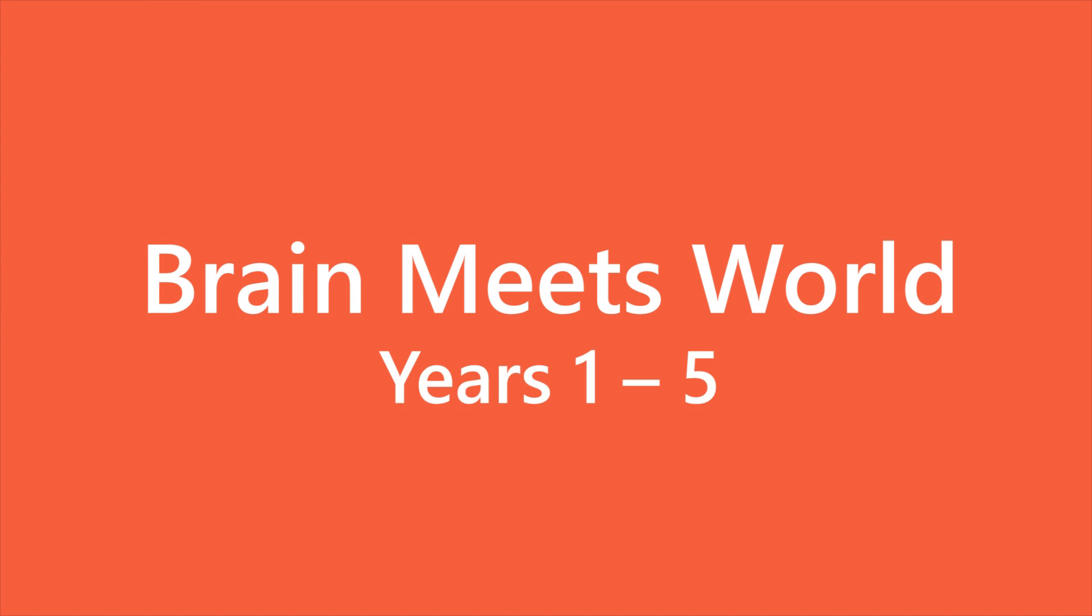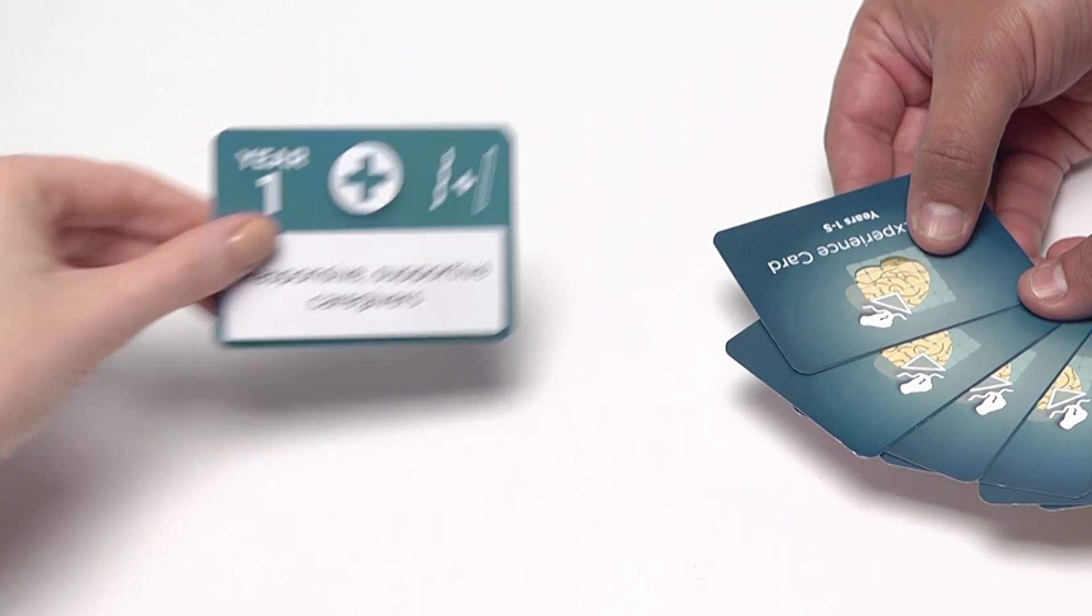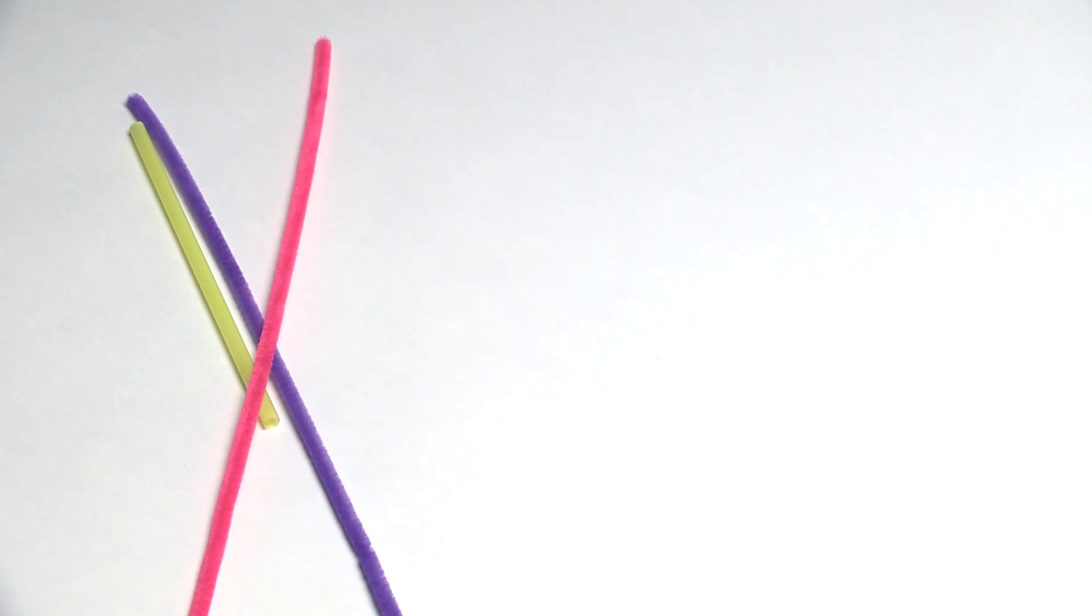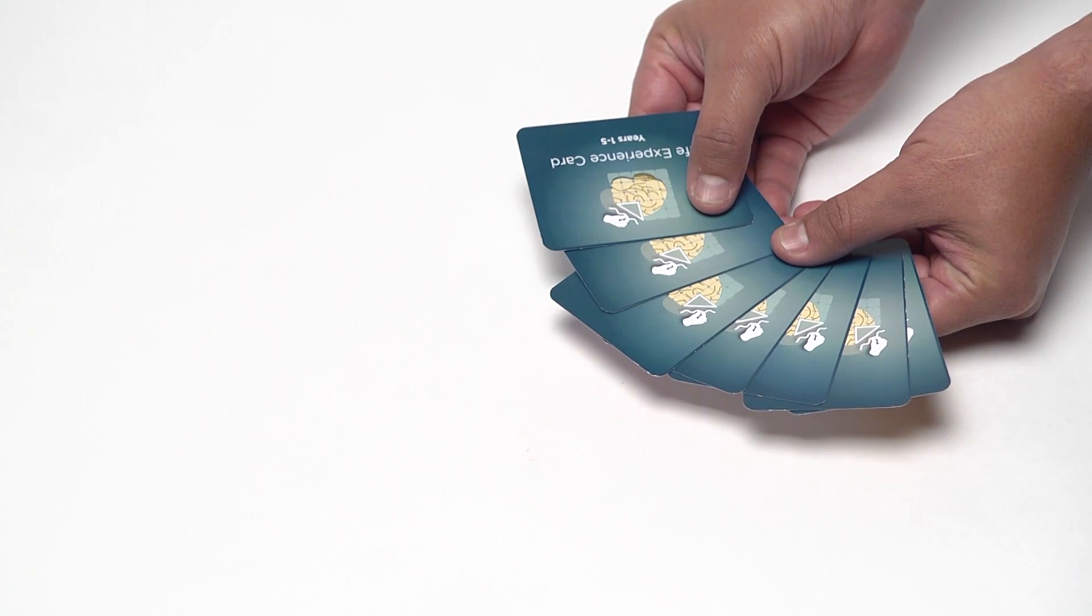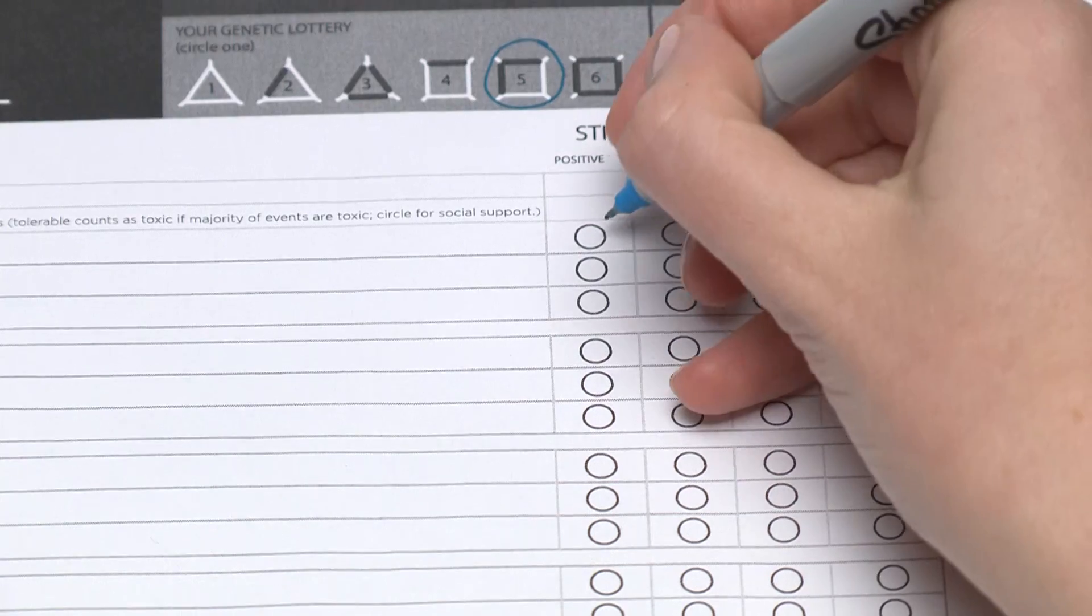Now that your brain is born, life happens. For each year, you'll draw three life experience cards. Their effect on your brain can be positive, toxic, or tolerable, which determines the materials you have to build with. Each time you draw a card, it's important to keep track of what type of experience it is in your life journal.